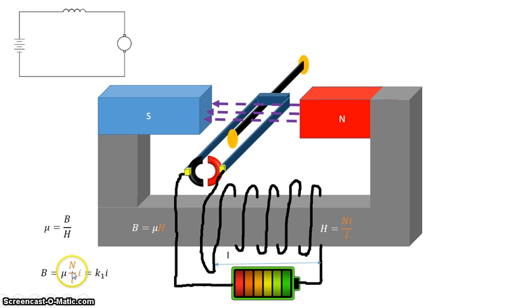But for a given motor, the permeability is a constant, the number of turns is a constant, the length l is a constant. So we can replace all of these constants with a constant called k₁.